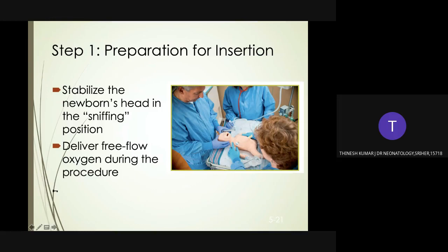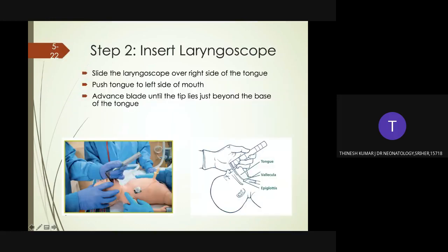How to intubate — step one: stabilize the newborn's head in a sniffing position, not too flexed and not too extended. Deliver free-flow oxygen during the procedure. Step two: insert the laryngoscope. Use your right index finger to gently open the baby's mouth, then insert the laryngoscope blade into the right side of the baby's mouth and slide the blade over the right side of the tongue towards the midline.